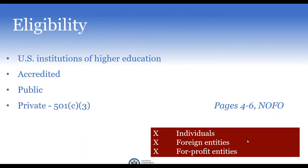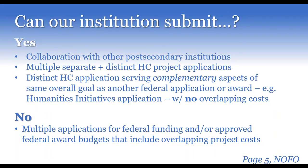Applicants must be accredited U.S. institutions of higher education, either public or private with 501(c)(3) status. If you're the project director, make sure you're affiliated with and submitting through an eligible institution of higher education — you cannot apply as an individual. The institution is the applicant, not you. Foreign and for-profit entities are ineligible. Collaboration with other post-secondary institutions is welcome, but a single institution must serve as the applicant of record, responsible programmatically, legally, and fiscally.